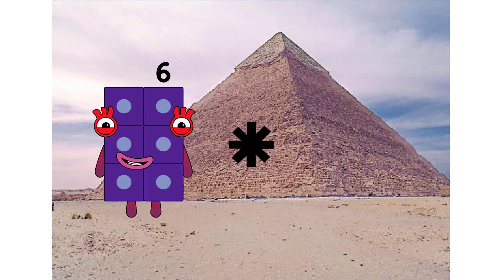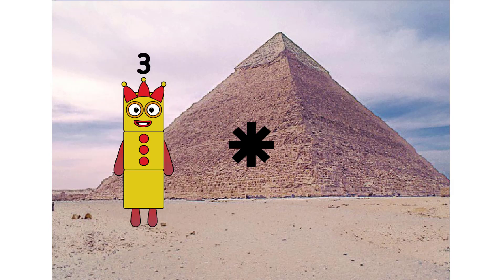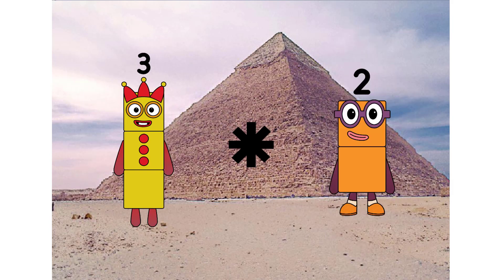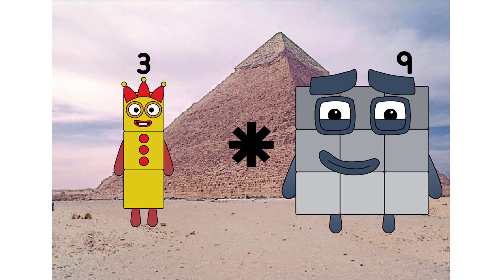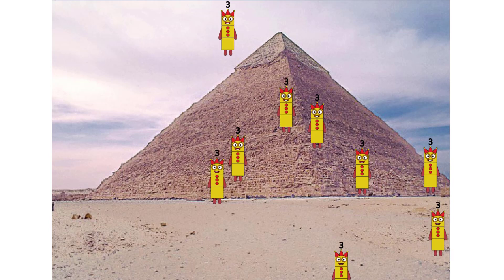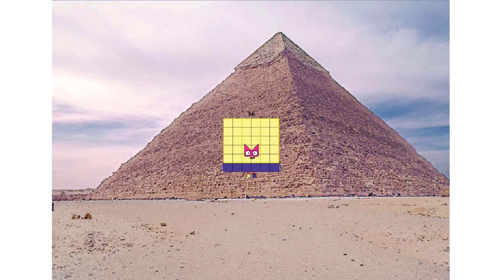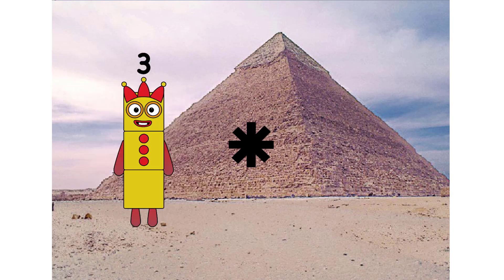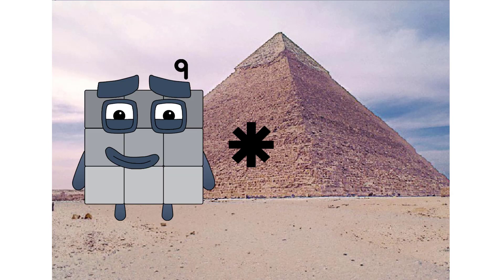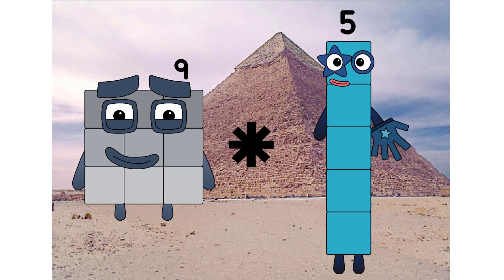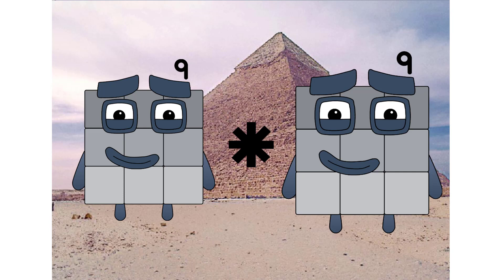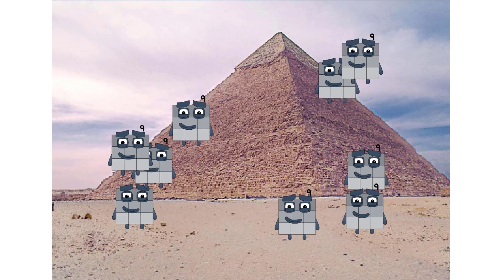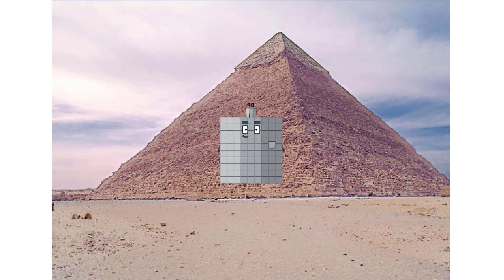Now, next question. 3 times 9 equals 36. 9 times 9 equals 90. You are so good.